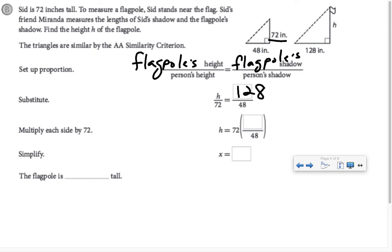And they're solving it by multiplying both sides by 72. You might have solved it by cross-multiplying. Either way, you should end up in the same place. So 72 times 128 divided by 48, so X is 192. The flagpole is 192 inches tall.